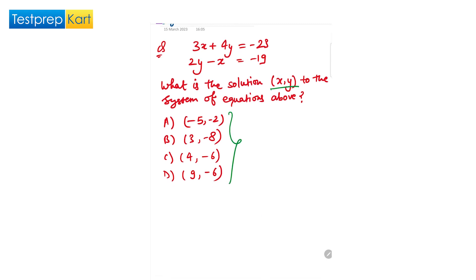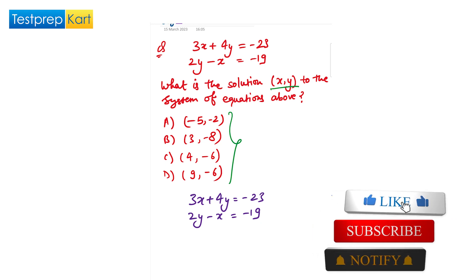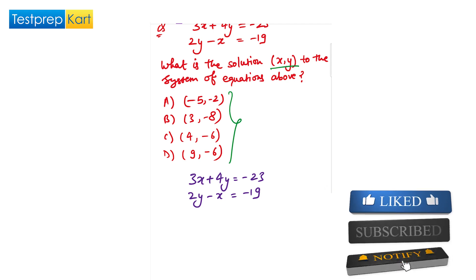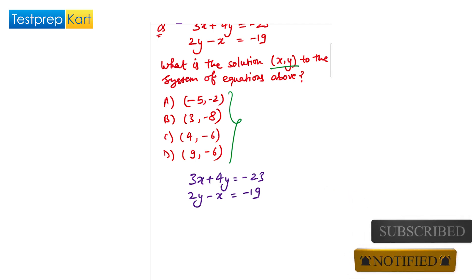Let's solve this question. Our question is 3x plus 4y equals minus 23, 2y minus x equals minus 19. In order to find the value of x and y, we have to eliminate one of the variables so that we can find the other variable. To cancel one variable, we have to make these equations equivalent to each other with opposite signs.